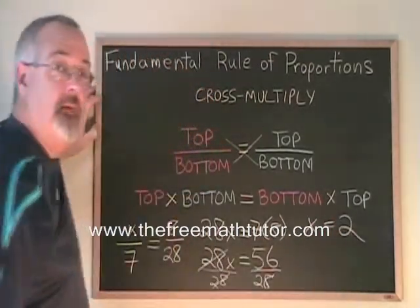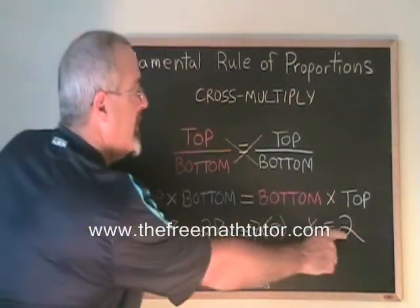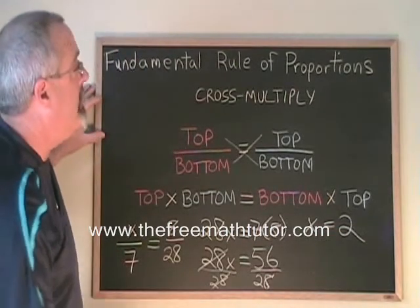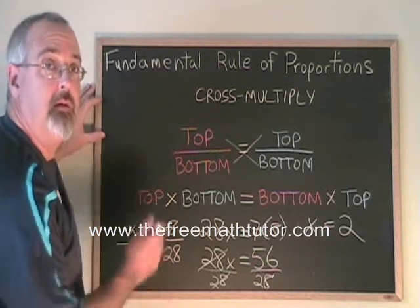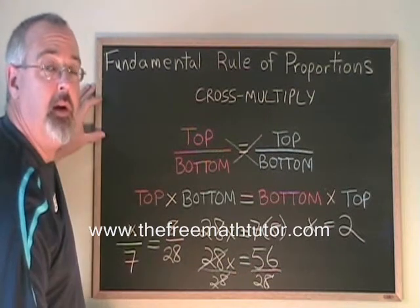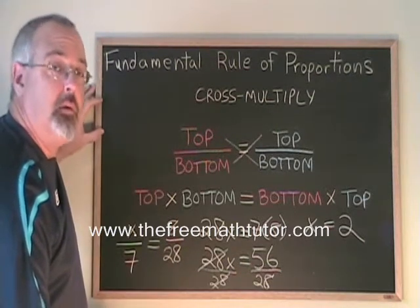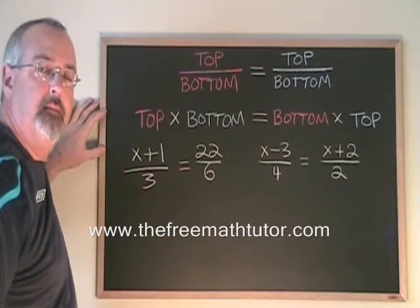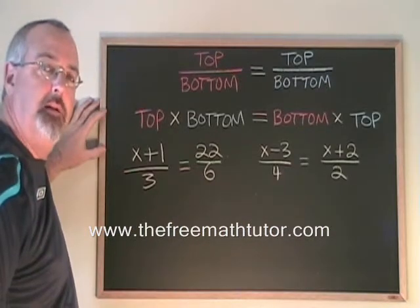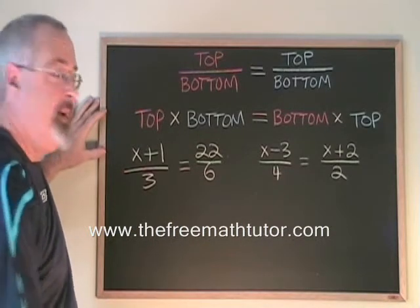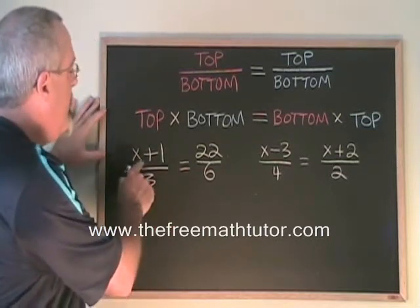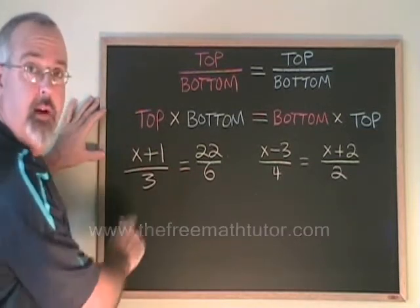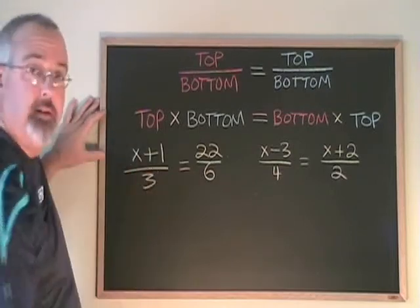We can verify that this is correct by plugging the 2 into the original proportion. So the fundamental rule of proportions simply means cross multiply — top times bottom equals bottom times top. Now let's look at some other examples. In this proportion, we actually have an algebraic expression in one of the positions, and we can still solve this.